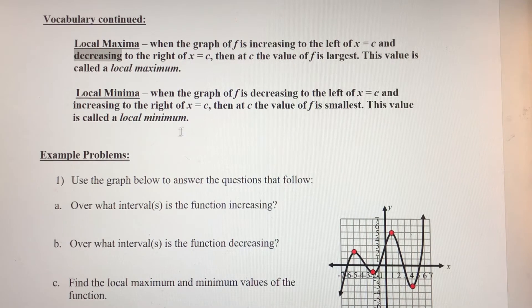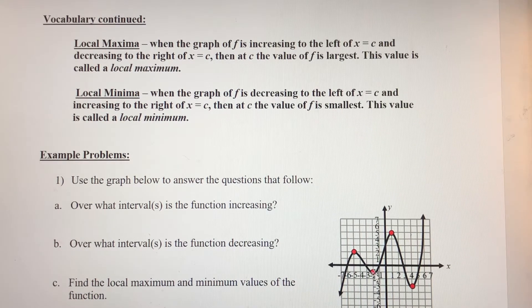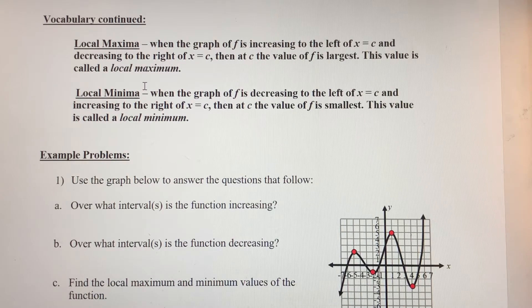Local minimum values occur when a function goes from decreasing to the left of it to increasing just to the right of it. This point in red is going to be considered a local minimum value — the function goes from decreasing to the left of that point to increasing immediately after. So that's a local max and a local min value.